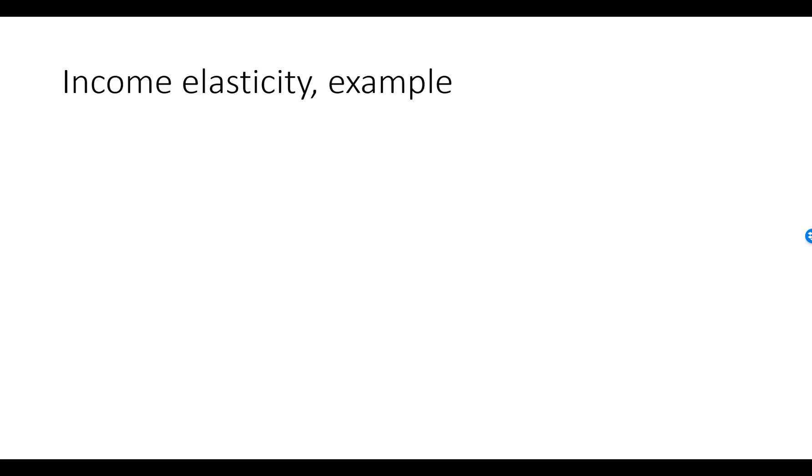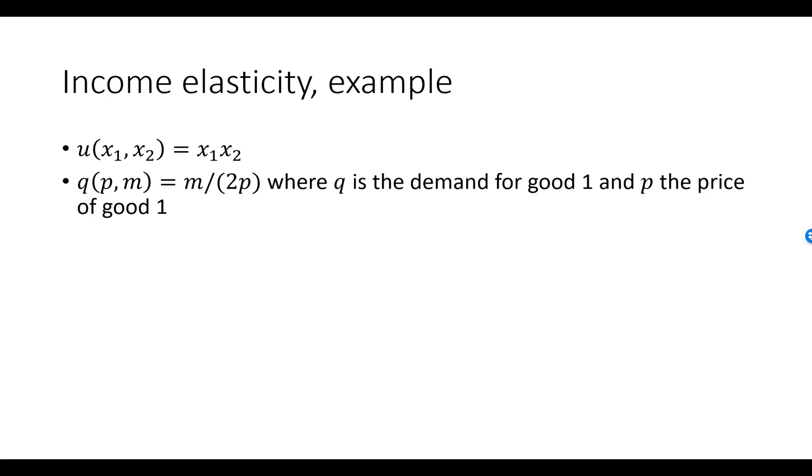Let's do a simple example. We know that with two goods and a Cobb-Douglas utility function u equal to x1, x2, the demand for good one, which we denote by q, is given by m over 2p, where p denotes the price of good one.